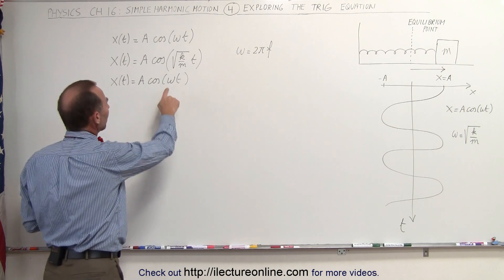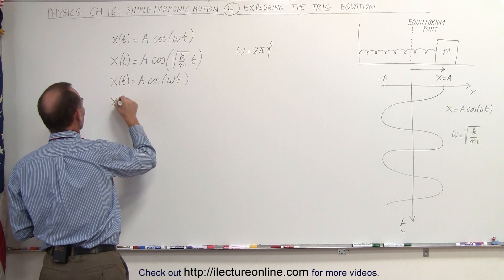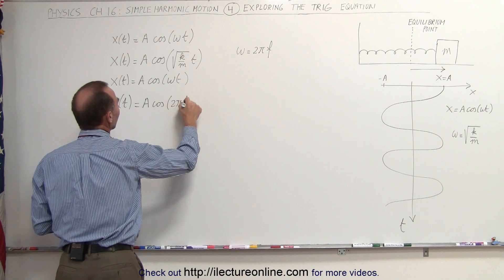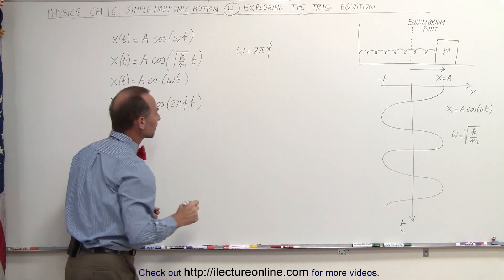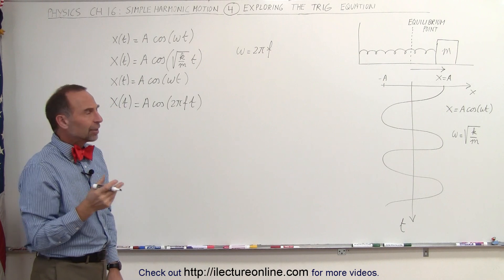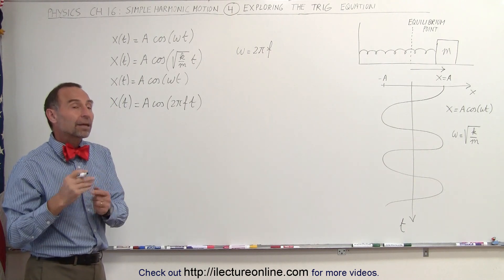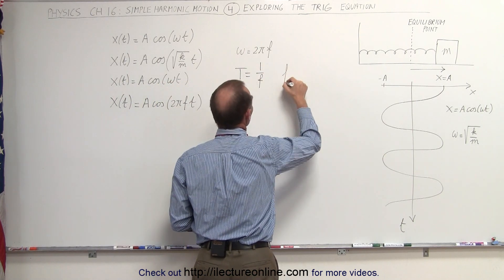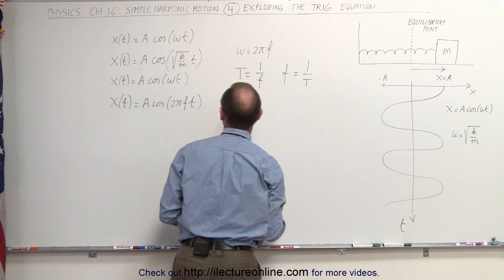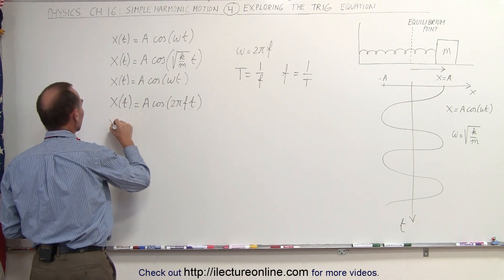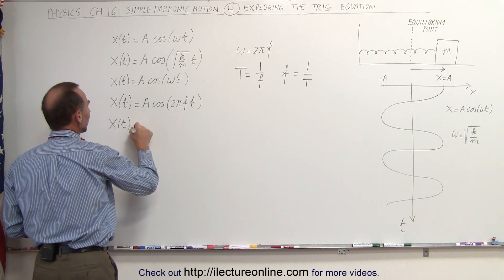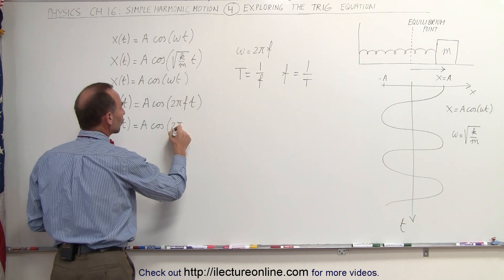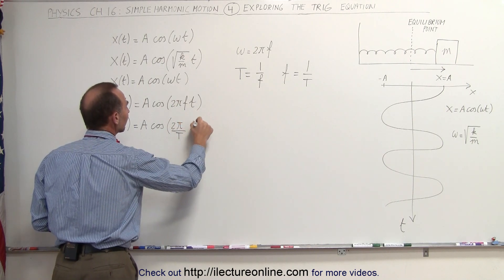So we can write omega as 2 pi f, giving us x as a function of time equals a times cosine of 2 pi f times t. The frequency f is also related to the period: the period equals 1 over f, or equivalently f equals 1 over the period. Substituting, we can write x as a function of time equals a times the cosine of 2 pi divided by the period, times t.